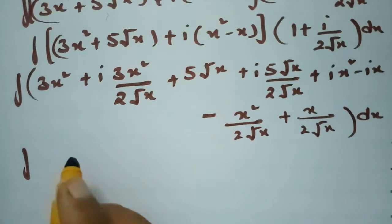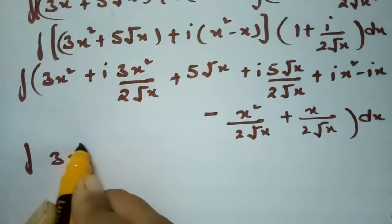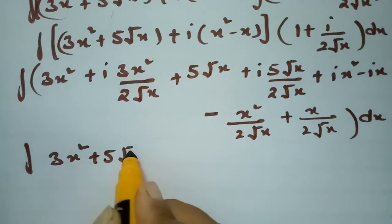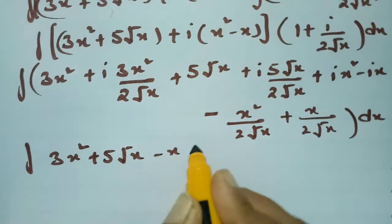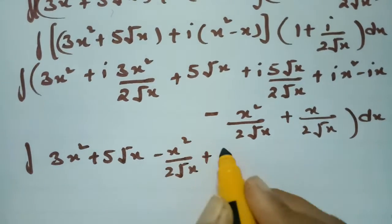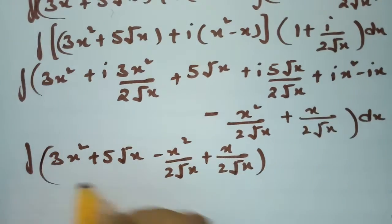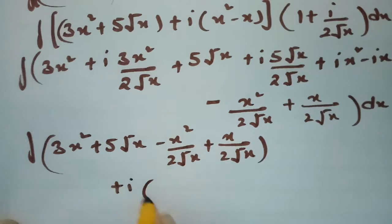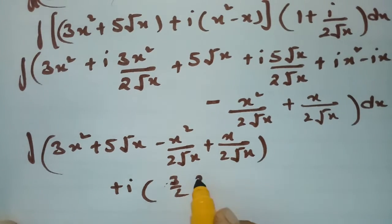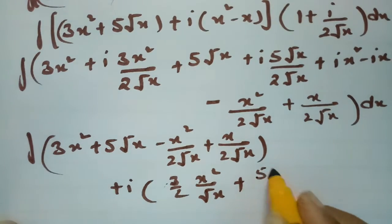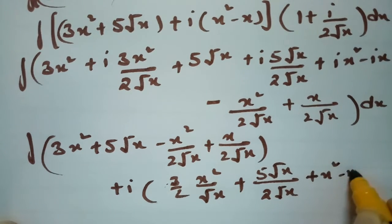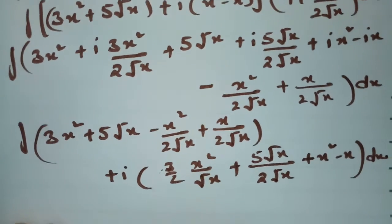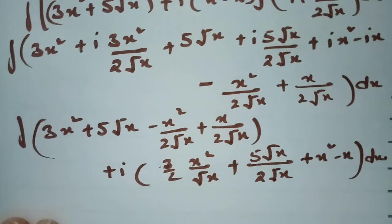Collecting terms, the real part is: 3x² + 5√x - x²/(2√x) + x/(2√x), and the imaginary part is: i times [3x²/(2√x) + 5√x/(2√x) + x² - x]. This is the real part and this is the imaginary part.